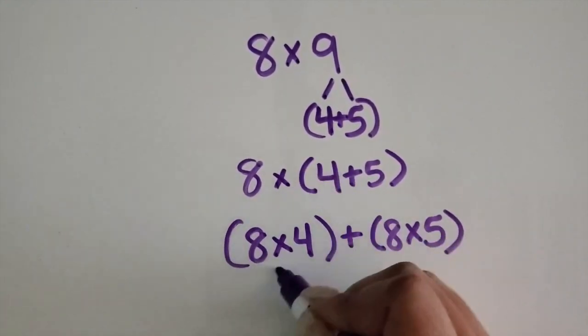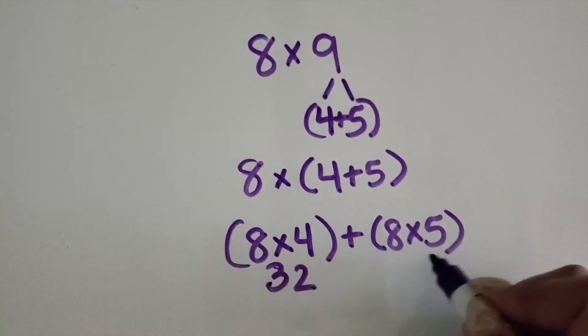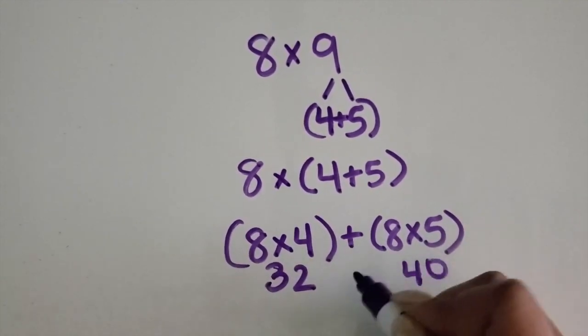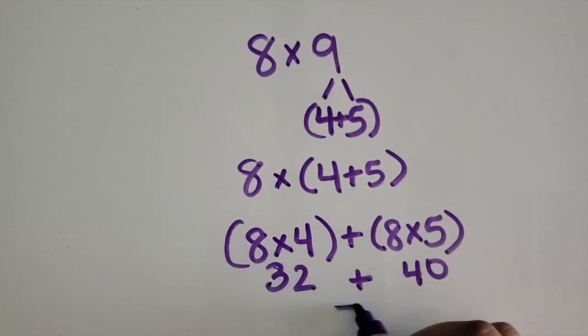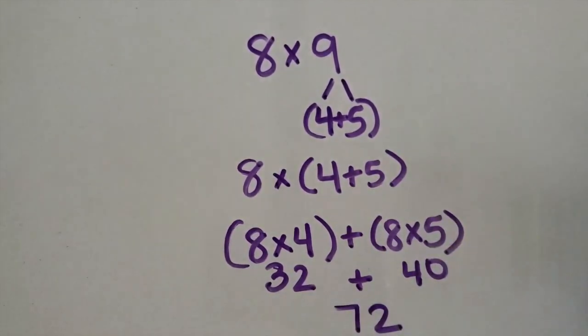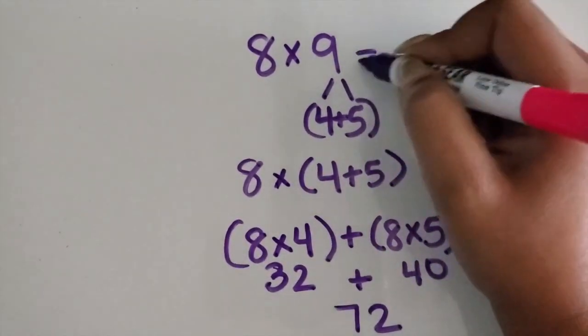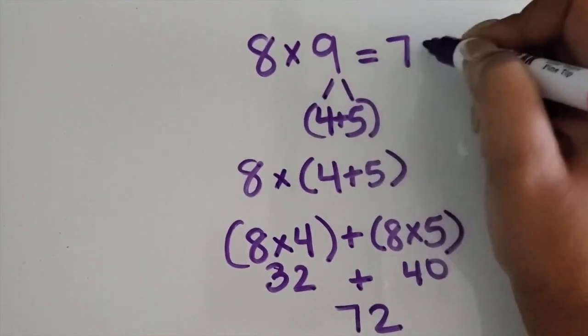8 times 4 is 32. 8 times 5 is 40. Join those back together. 32 and 40 is 72. So the product of 8 times 9 is 72.